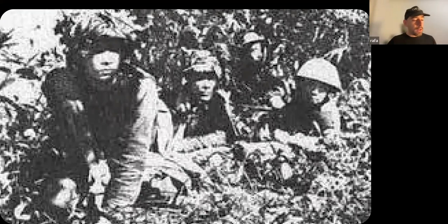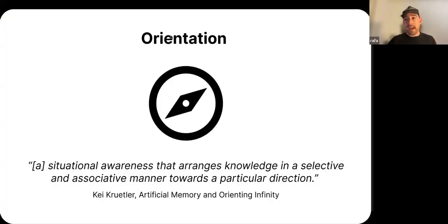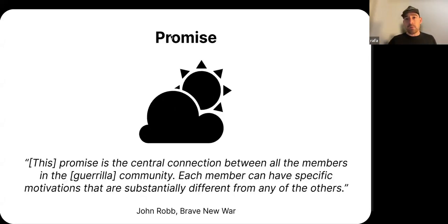When we think about it, what do all these things have in common—these animal aggregations, these crowds, these guerrilla formations? They have a shared orientation. Or as Kia Crutler mentions in Artificial Memory and Orienting Infinity, a new essay as part of the Summer Protocols program, a situational awareness that arranges knowledge in a selective and associative manner towards a particular direction. When we think about that direction, we ask, oriented towards what? The language that I've been able to discover throughout the research is this concept of a promise.